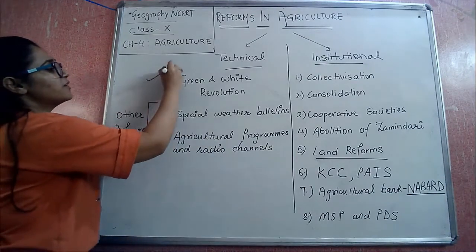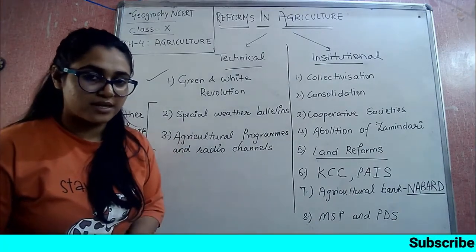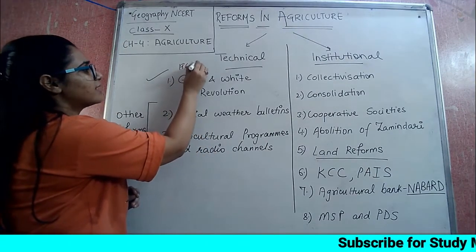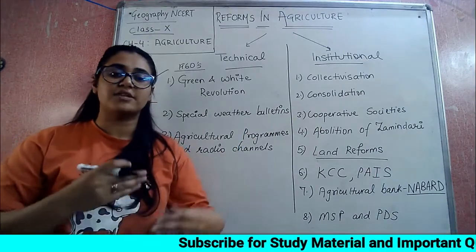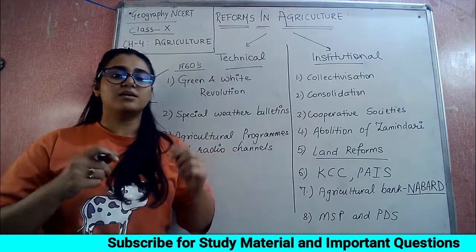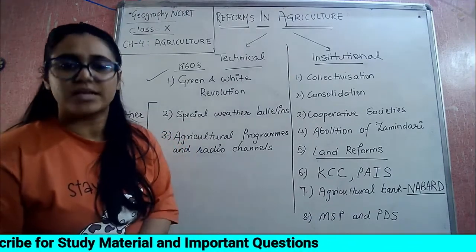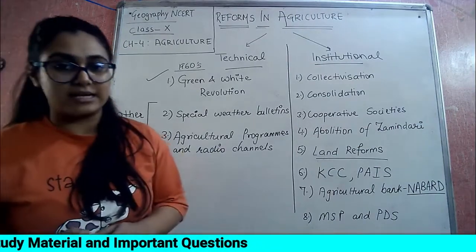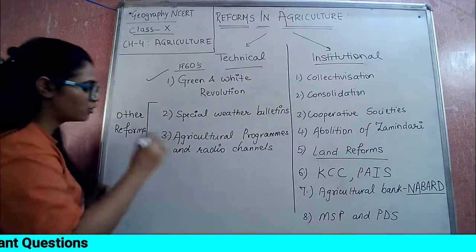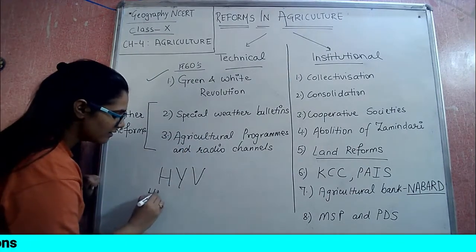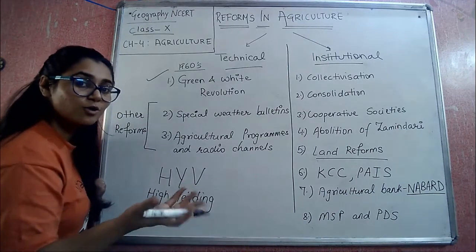The first thing under technical reforms is the Green and White Revolution. The green revolution came in the 1960s. There is no proper single year for it because it unfolded very slowly and gradually, level by level. Slowly and gradually, farmers aligned themselves with the new method of growing crops. In the green revolution, very modified things were introduced - HYV, that is High Yielding Varieties. Yield means how much crop is produced - the output. High yielding varieties.